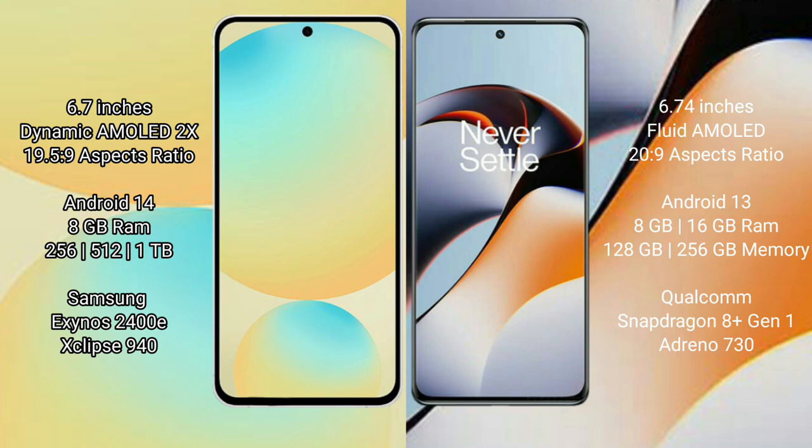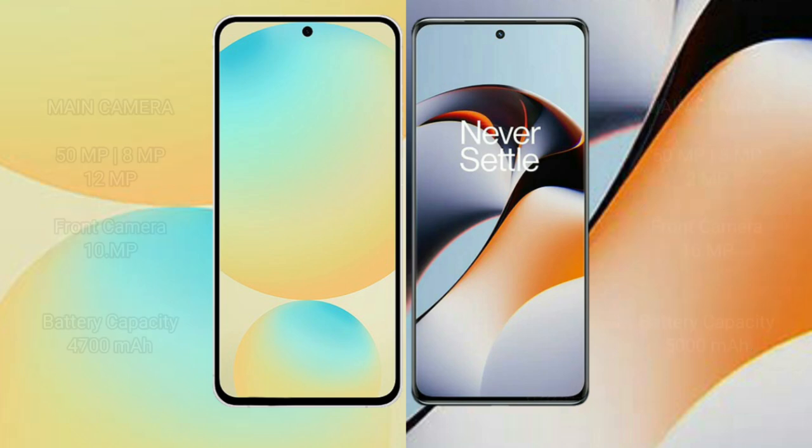Samsung Galaxy S24 FE is powered by the Exynos 2400E processor with an Adreno 940 GPU. OnePlus 11R offers 8GB and 16GB RAM with 256GB internal storage, and is powered by the Qualcomm Snapdragon 8 Gen 2 processor with an Adreno 730 GPU.